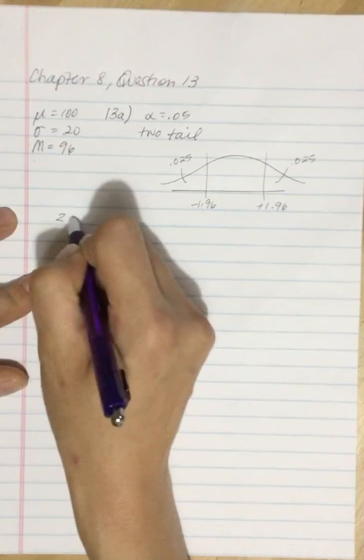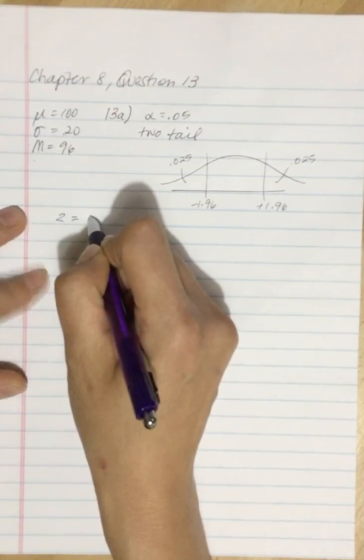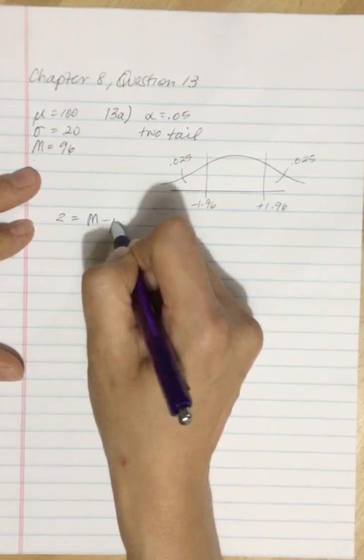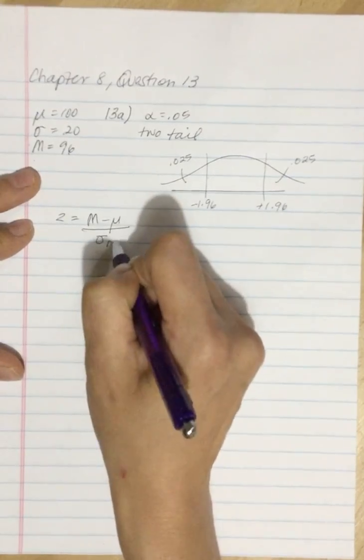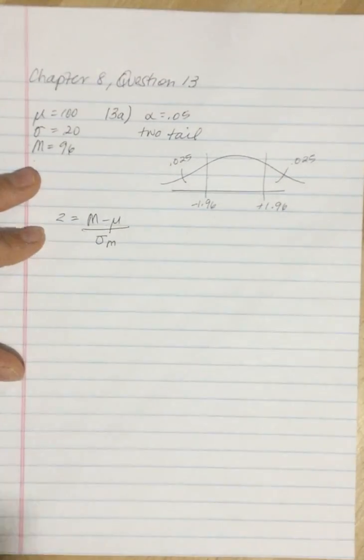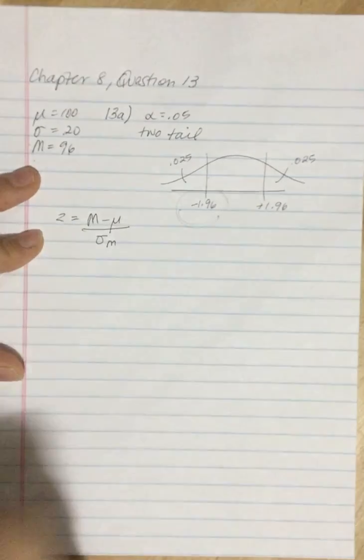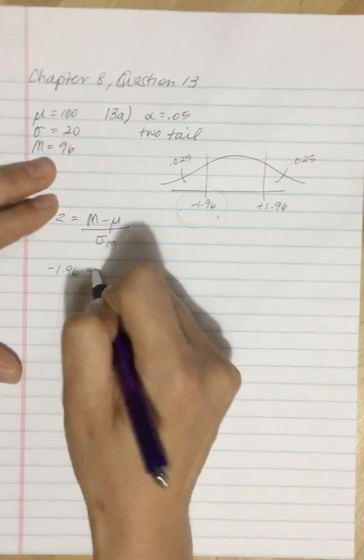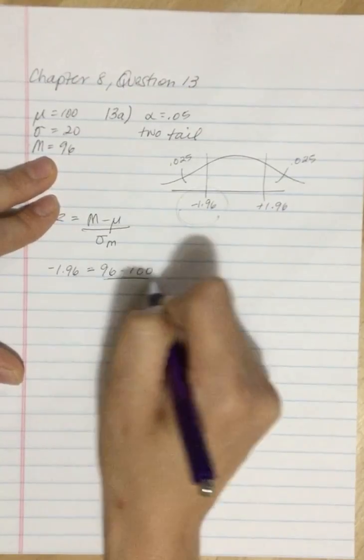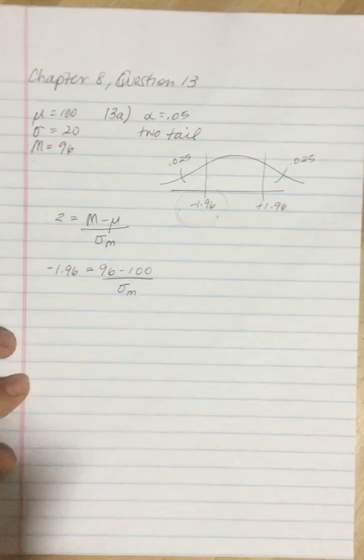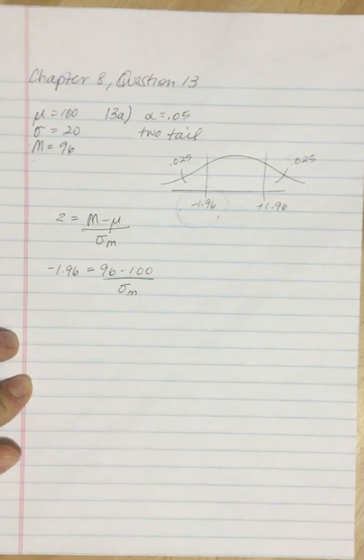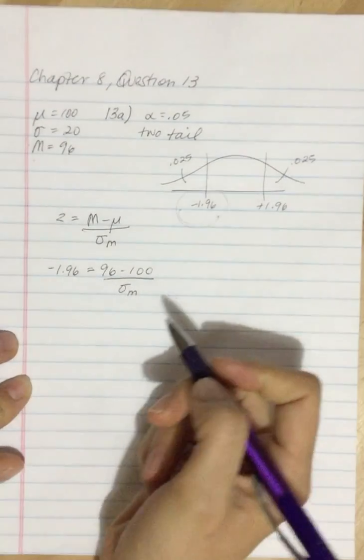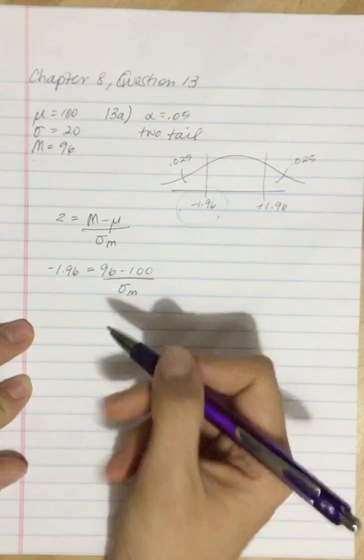So what we do is we take the Z-score and it is going to be the mean minus mu divided by the standard error. And we're going to plug in this value for our mean. We have 96 subtract 100 divided by the standard error, and that standard error is what we're going to solve for.